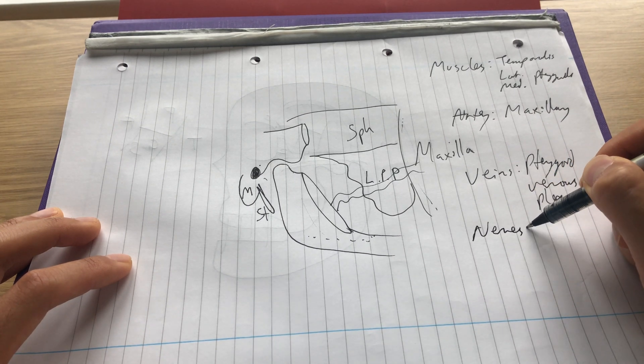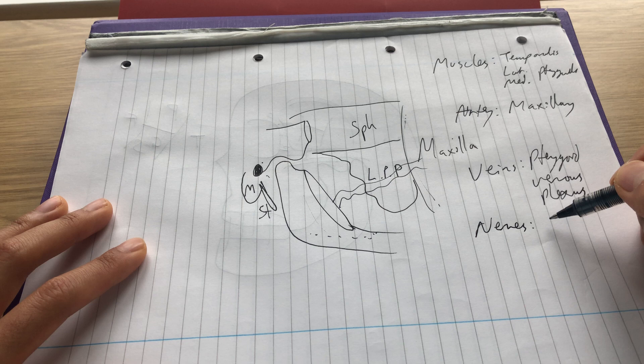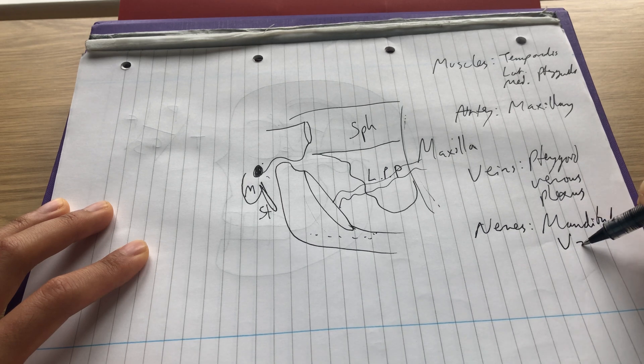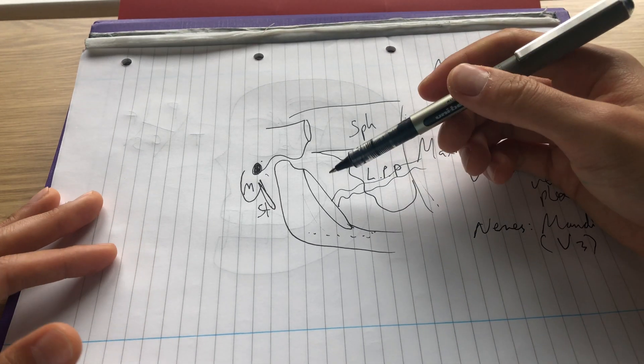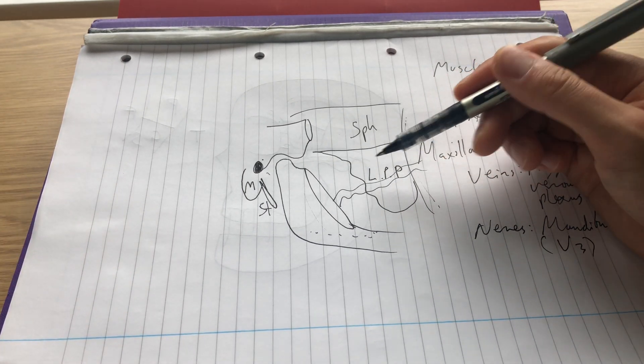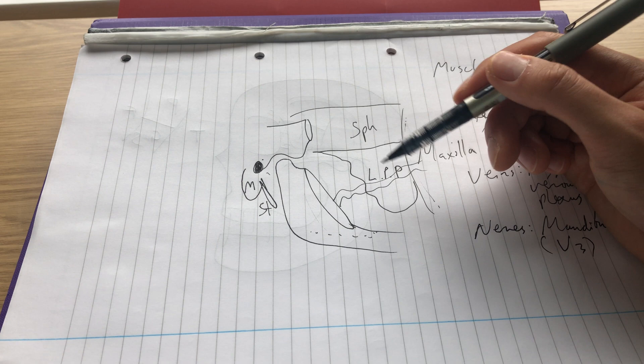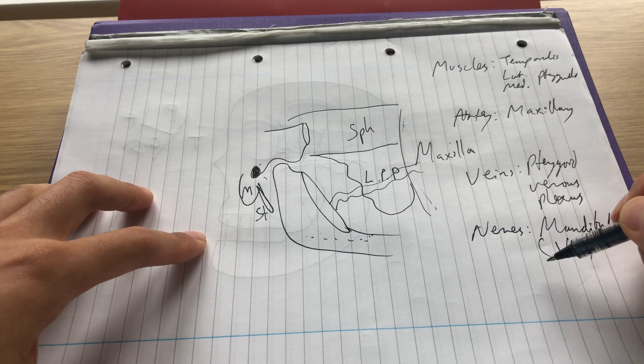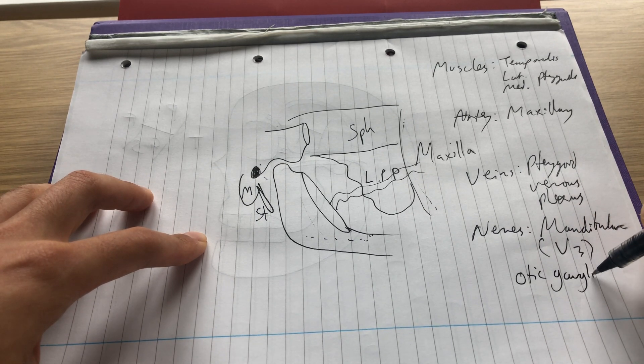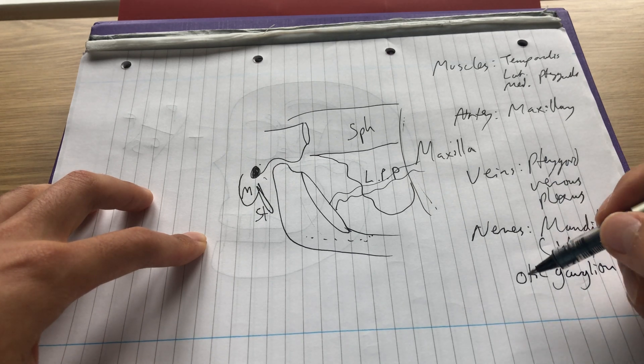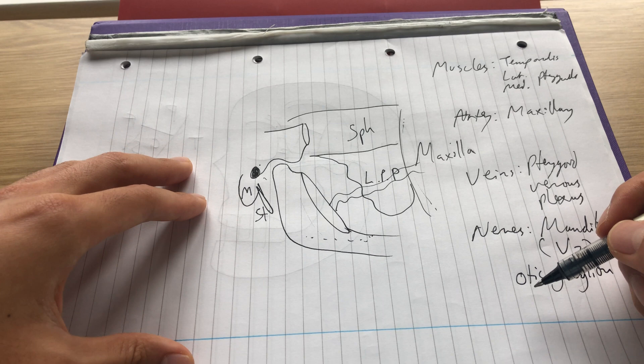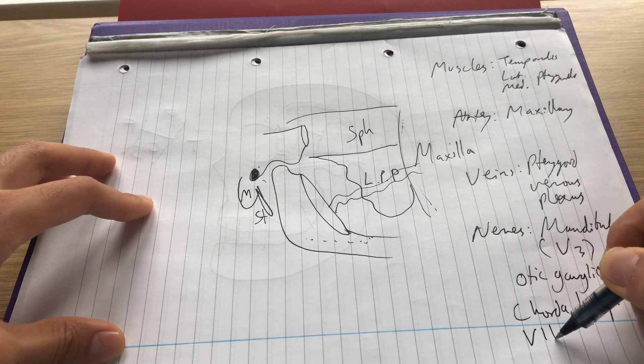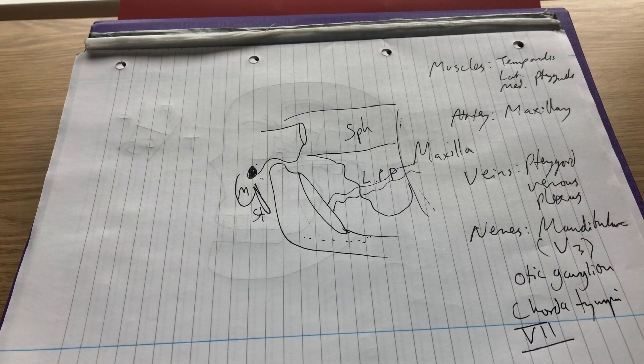Lastly, nerves. So the main nerve is the mandibular branch of the trigeminal nerve. And also all of its other branches, including, for example, the lingual, auriculotemporal, buccal. I won't go into all those details today. They'll be explained in a different video. Also should be noted the otic ganglion. It's also present as well as the chorda tympani, which is, as you know, a branch of the facial nerve coming from the middle ear.